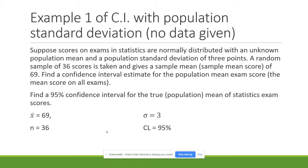They want to find a confidence interval to say the scores are going to range from a lower bound to an upper bound, and it's 95 percent. The sample mean is 69, population standard deviation is 3, sample size is 36, and the confidence level is 95 percent.